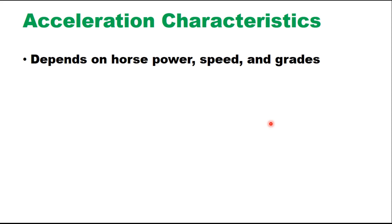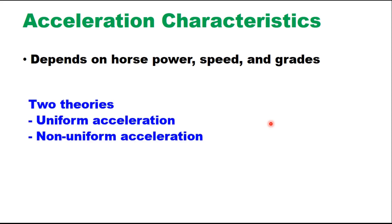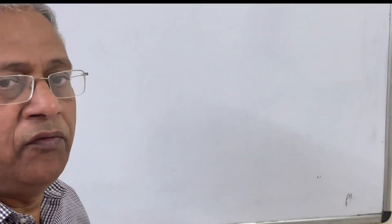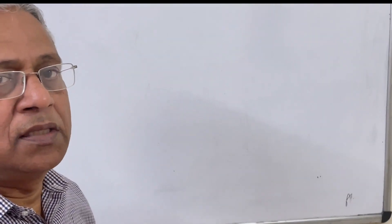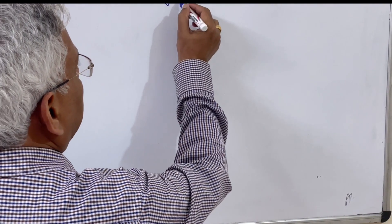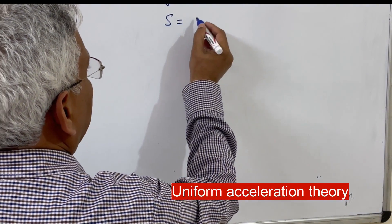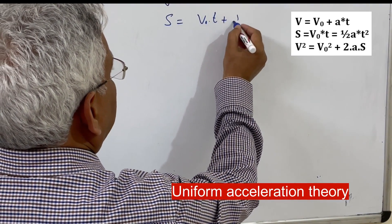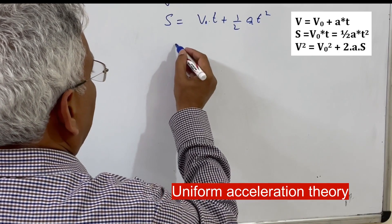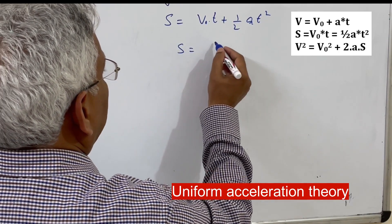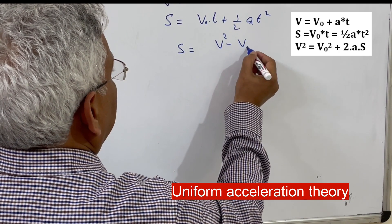Acceleration characteristics of a vehicle depend on horsepower, speed, and gradient. There are two theories of acceleration: uniform acceleration theory and non-uniform acceleration theory. Let me go to the whiteboard to explain these two theories. Uniform acceleration theory is based on the simple equations of motion: v = v₀ + at, or s = v₀t + ½at².